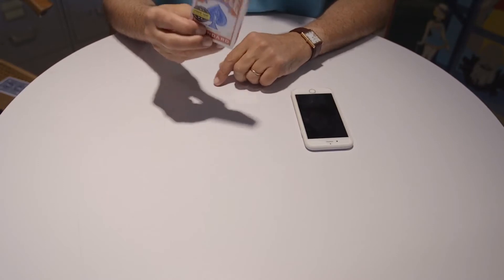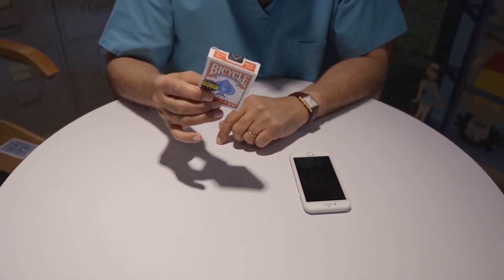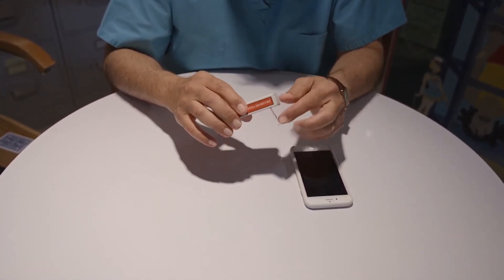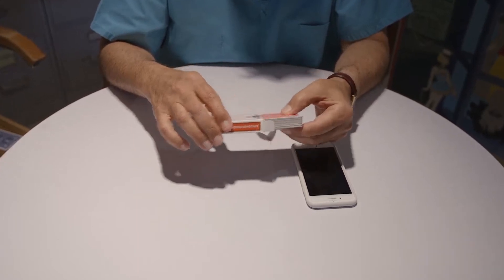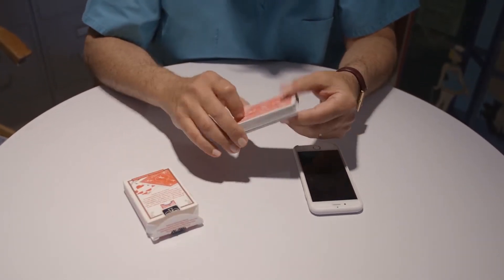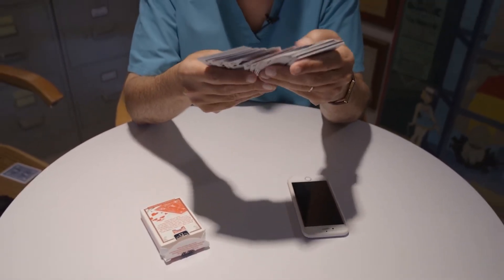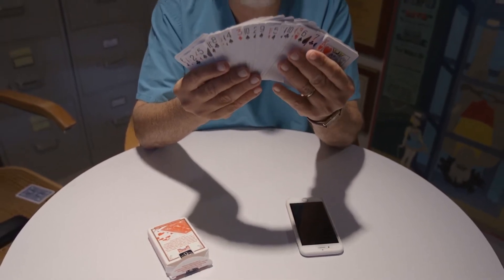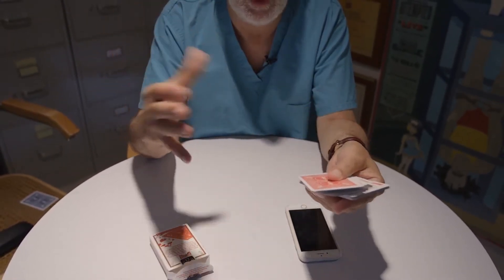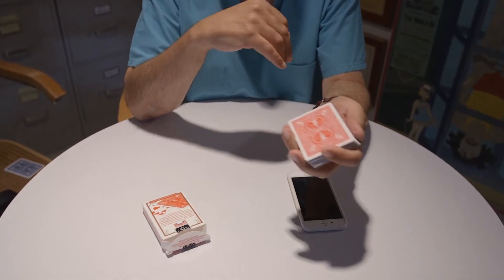So the first thing you will do to perform Flash Beam is remove the cards from the pack. You can now show all the cards to be different, and if you wish you could cut the cards and you can also shuffle the cards.